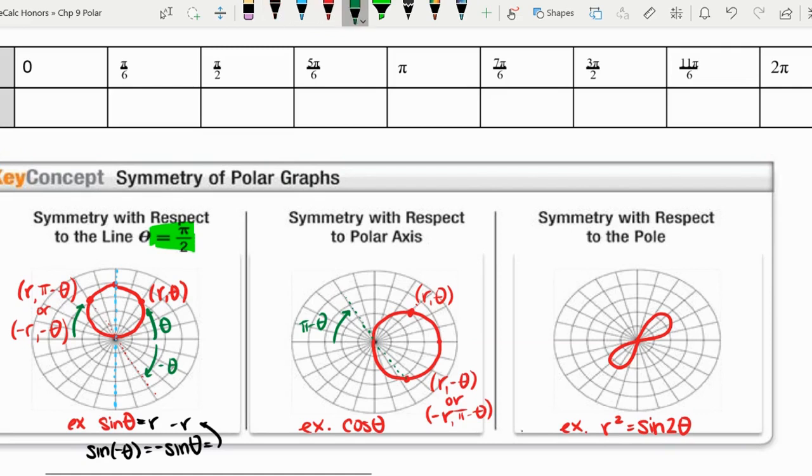This is symmetry with respect to the pole. If I have a point r theta, it's like rotating it 180 degrees around. So really, that would be adding pi to our angle.